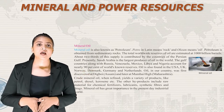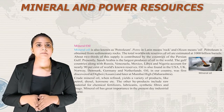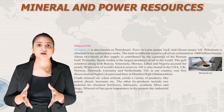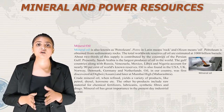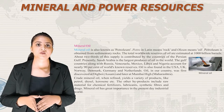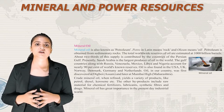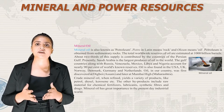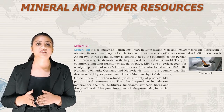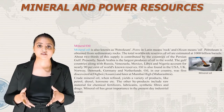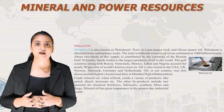Now let's talk about mineral oils. Mineral oil is also known as petroleum — 'petro' in Latin means rock and 'oleum' means oil. Petroleum is obtained from sedimentary rocks. Total worldwide reserves of oil are estimated at 1,000 billion barrels, with about two-thirds contributed by countries of the Persian Gulf. Saudi Arabia is the largest producer of oil in the world. Gulf countries along with Russia, Venezuela, Mexico, Libya and Nigeria account for nearly 90% of the world's known reserves. Oil is also found in USA, UK, Norway, Denmark, Germany and Netherlands. Oil in India was first discovered at Digboi in Assam and later at Mumbai High in Maharashtra.